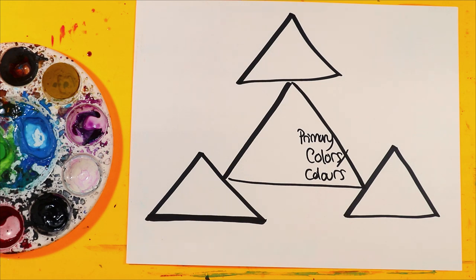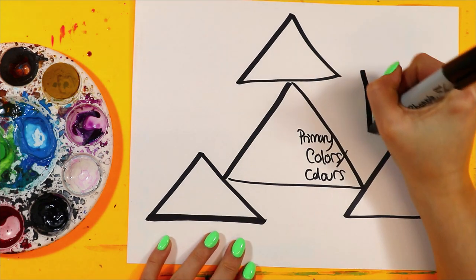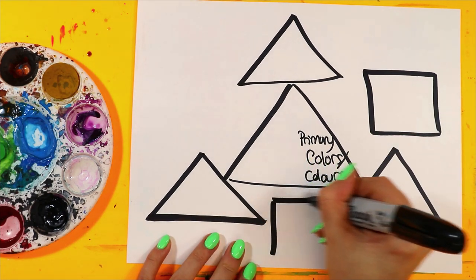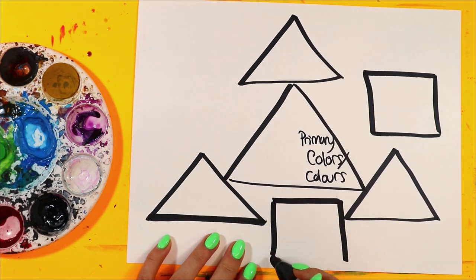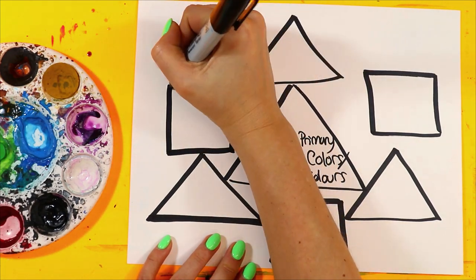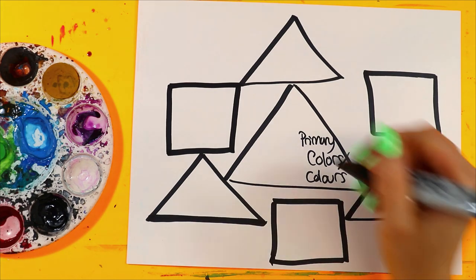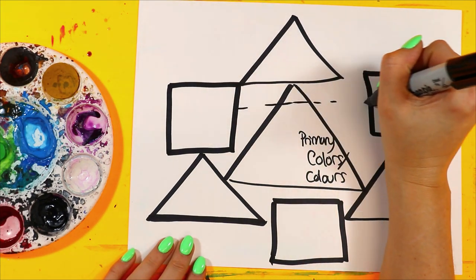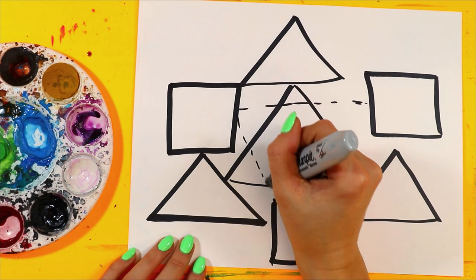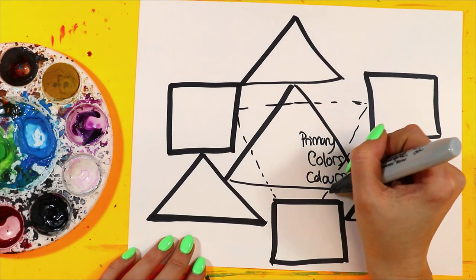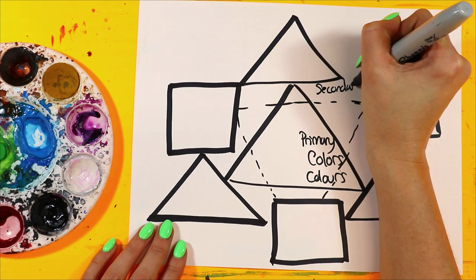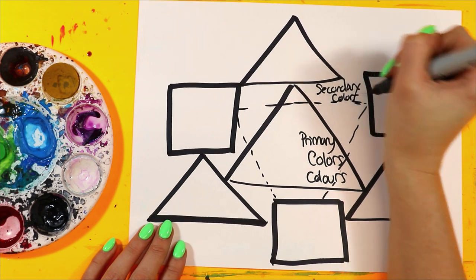Now in between we're going to draw a square that's going to be for our secondary colors. Okay now let's add dash lines across. And these ones are our secondary colors. Alright, primary and secondary colors.